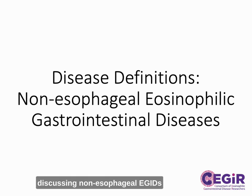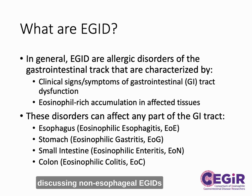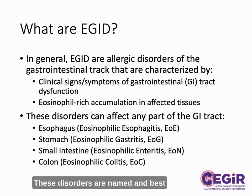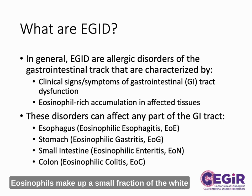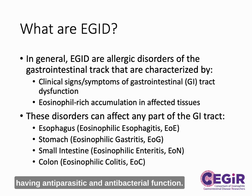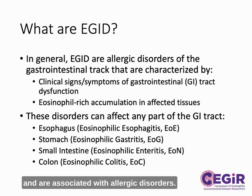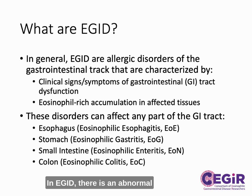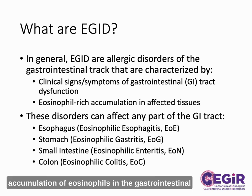In this video, we will be discussing non-esophageal eGIDS. Eosinophilic gastrointestinal diseases, or eGIDS, are generally categorized as allergic disorders of the gastrointestinal tract. These disorders are named and best known for their association with eosinophils. Eosinophils make up a small fraction of the white blood cells in the peripheral blood, but are also found normally in many tissues throughout the body. Eosinophils function in a variety of ways to protect the host, including having antiparasitic and antibacterial function. Eosinophils can modify the inflammatory response and are associated with allergic disorders. In eGIDS, there is an abnormal accumulation of eosinophils in the gastrointestinal tissue, leading to dysfunction.